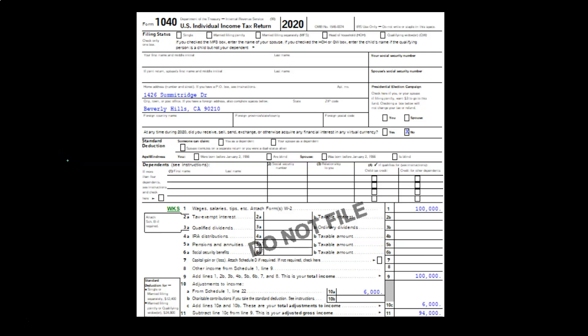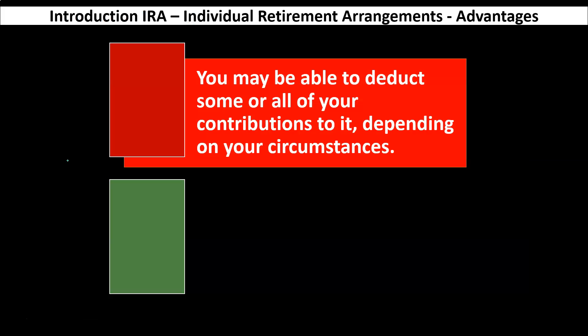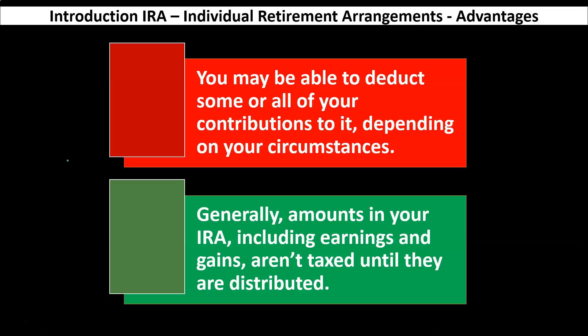It'll make more sense when we run scenarios in the following presentation. Introduction to IRA — individual retirement arrangements. Advantages: you may be able to deduct some or all of your contributions depending on your circumstances. If it's a traditional IRA, when you put the money in you get the above-the-line deduction for it. Generally, amounts in your IRA including earnings and gains aren't taxed until they are distributed — the money isn't taxed until you take it out.